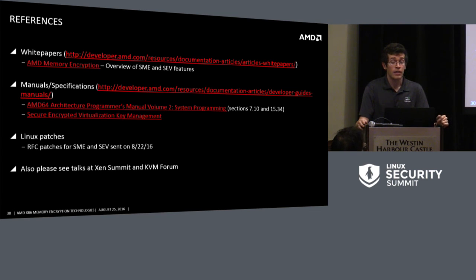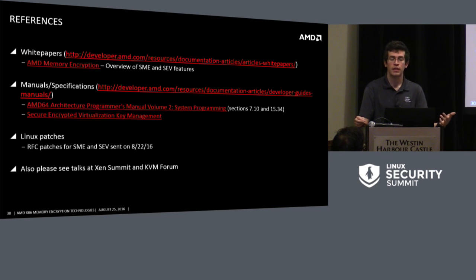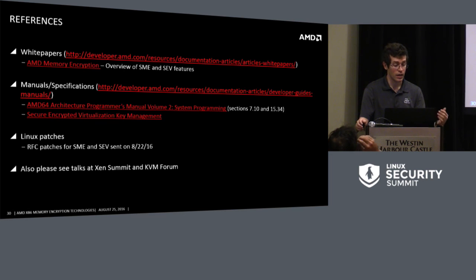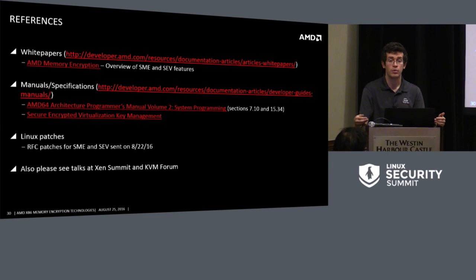Documentation pointers: we have a white paper, the AMD64 Architecture Programmer's Manual covering CPUID functions and MSRs, and the Secure Encrypted Virtualization Key Management document covering the API spec. Comments on the RFC patches sent to the mailing list this week are also welcome. Two colleagues — Tom Lendacky and Brijesh Singh — are giving talks at KVM Forum and Xen Summit respectively regarding this feature and hypervisor support.